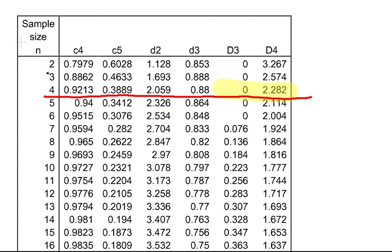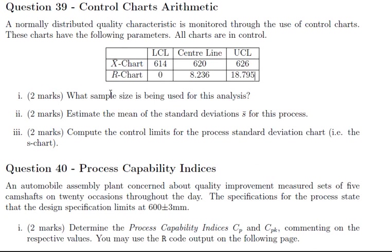C4 is going to be 0.9213, C5 is going to be 0.3889 and so on. So you are actually able to figure it out by computing D3 and D4 and seeing what batch size that would equate to. So you start off there at the X chart measurements. Now the next question: Estimate the mean of the standard deviations S bar for this process.